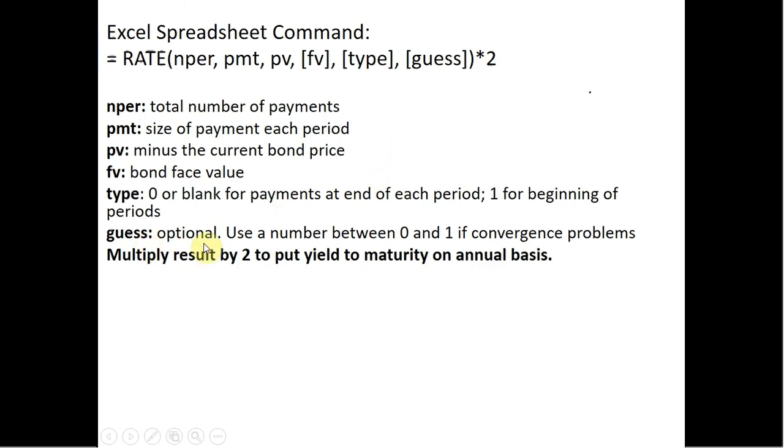guess is also optional. If Excel's having a hard time converging on an answer, you might want to supply a guess for the yield to maturity, some number between zero and one.